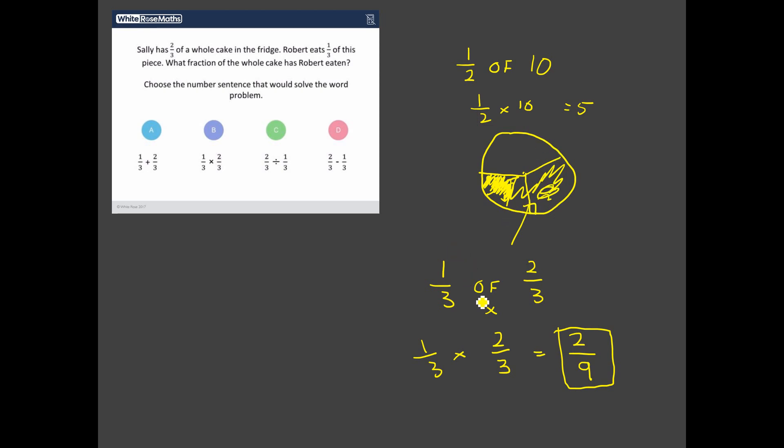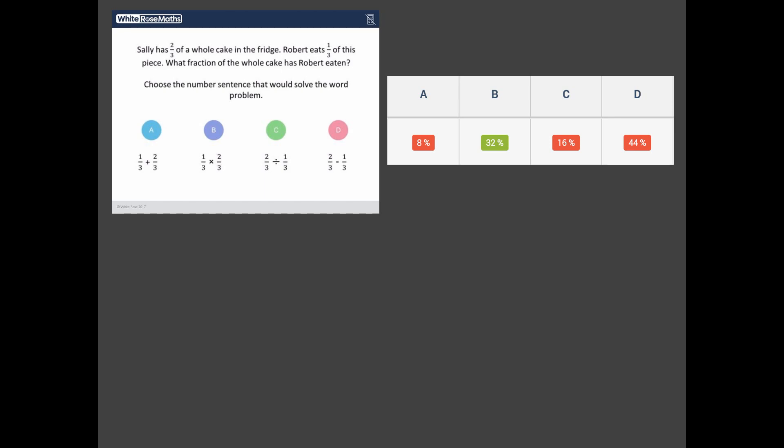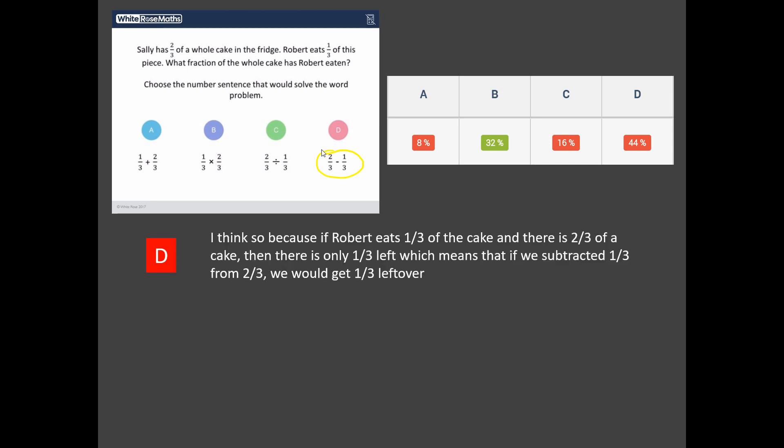So, I'm claiming the correct answer to this is B. Now, this is a poorly answered question, as we know. Let's see how poorly answered it is. Look at that. Only 32% of students got this question correct. What's the most popular choice of wrong answer? It's D, subtract. Now, why would students be doing two-thirds subtract a third? Well, I'll tell you what. I've got three of their explanations, so you can get into their minds yourself.